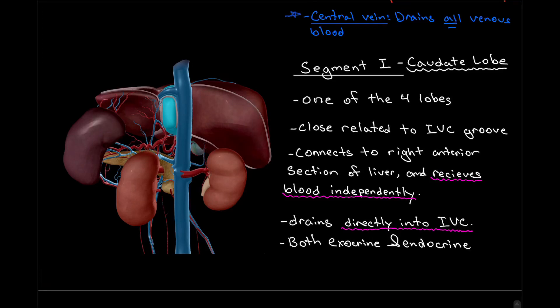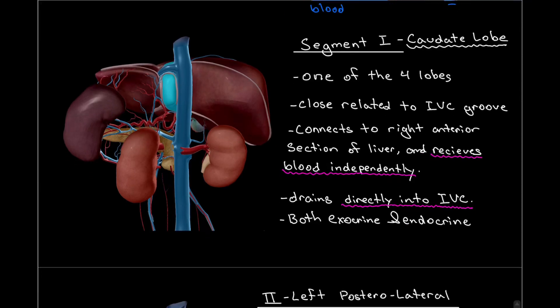Now we're going to be talking about the eight separate segments of the liver. We can see here, highlighted in blue, segment number one — the caudate lobe. It is also part of the four lobes of the liver. It is considered a segment because it receives its own vascular biliary tree. One thing to mention about the caudate lobe is that it drains its blood directly into the inferior vena cava.